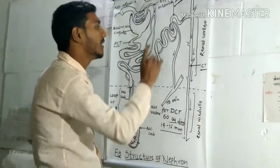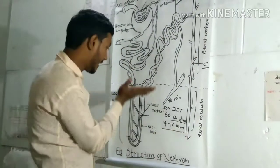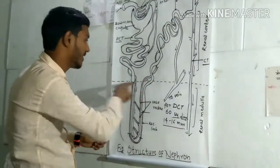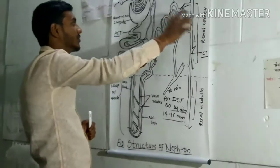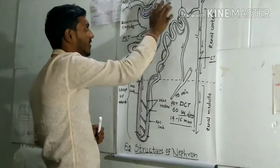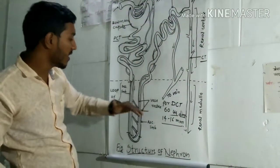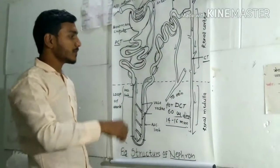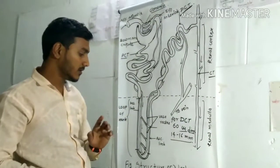The parts present in the renal cortex are: Bowman's capsule, PCT, DCT, half of the collecting tubule, afferent arteriole, glomerulus, and the Malpighian body. The part present in the renal medulla is only the loop of Henle and the other half of the collecting tubule. You can see this demarcated in the diagram — which part is in the cortex and which part is in the medulla.